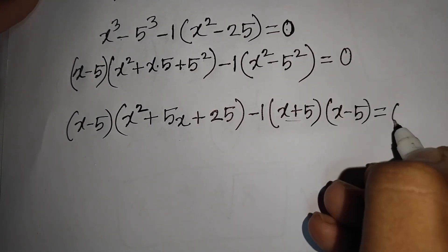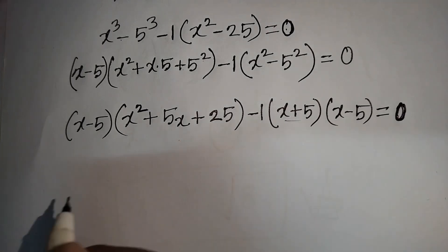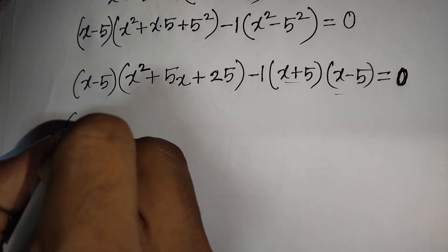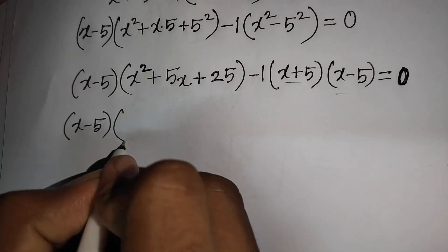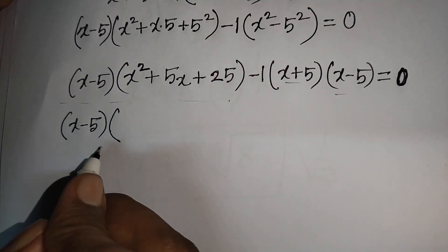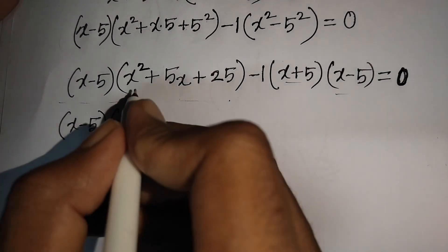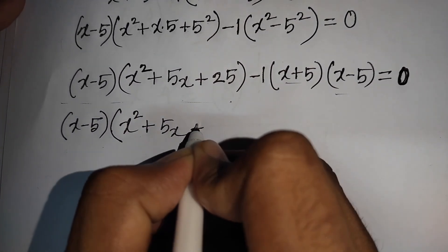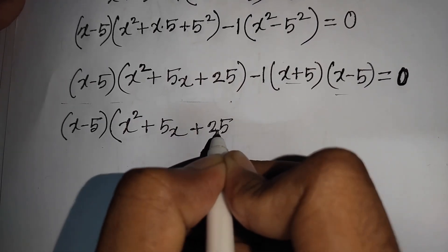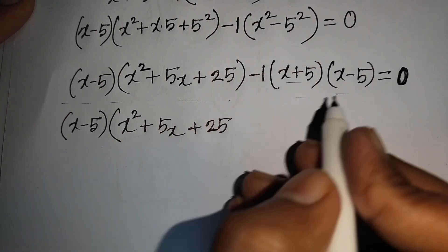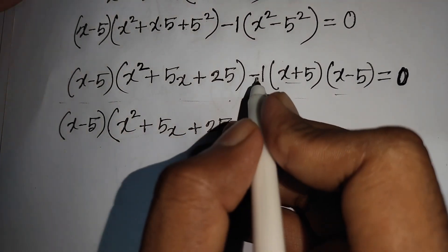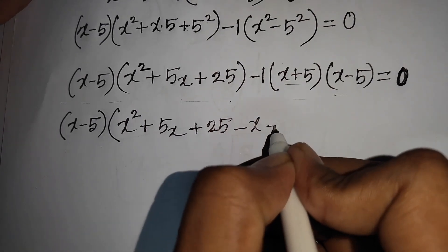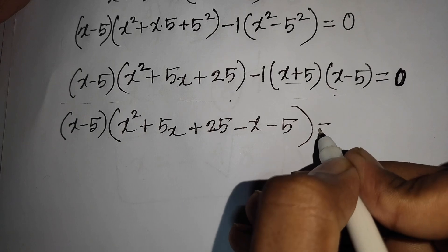Now we see that (x minus 5) is common, so take (x minus 5) out. This (x minus 5) cancels, leaving x² + 5x + 25. The other (x minus 5) also cancels, giving minus 1 times (x + 5), which is minus x minus 5. Bracket close equals 0.